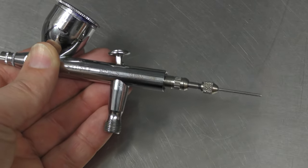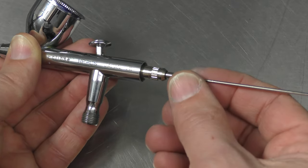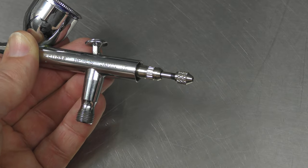First thing, remove the handle and we need to remove that needle. With the needle chucking nut which is this here, you only have to loosen it, you don't have to totally unscrew it to remove that needle.